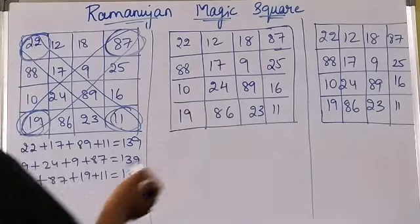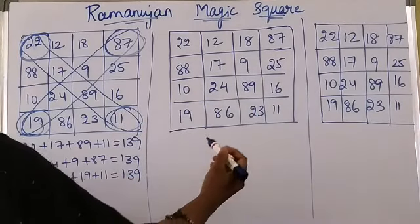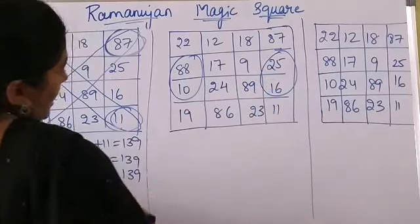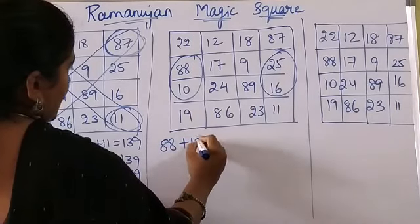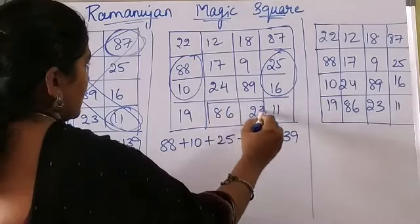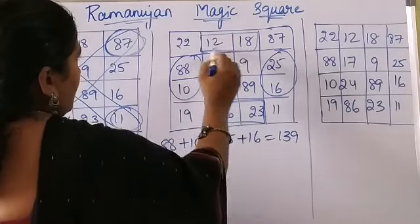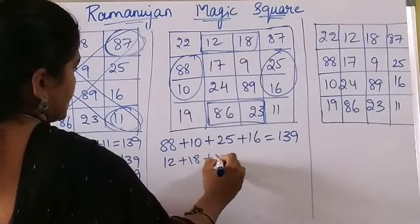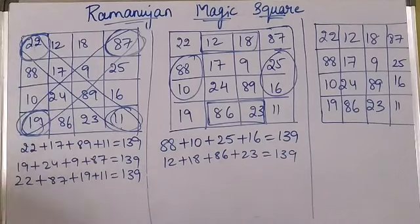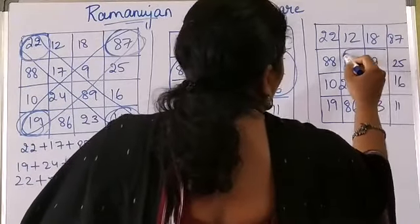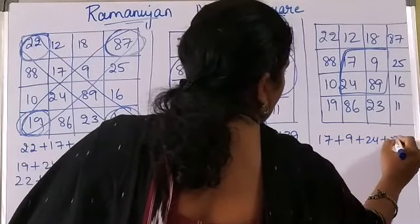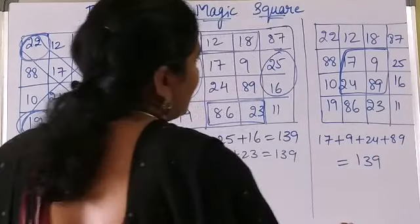Here is one more pattern using the same magic square. When you add 88 plus 10 plus 25 plus 16, that gives you 139. Similarly, 12 plus 18 plus 86 plus 23 will also give 139. And the middle four: 17 plus 9 plus 24 plus 89 also gives 139.